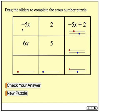Looking down here in this first column, I'm going to add negative 5x and 6x, and that just gives me x, or another way to say that is 1x. And here, I'm going to add 2 and 5. That gives me 7.